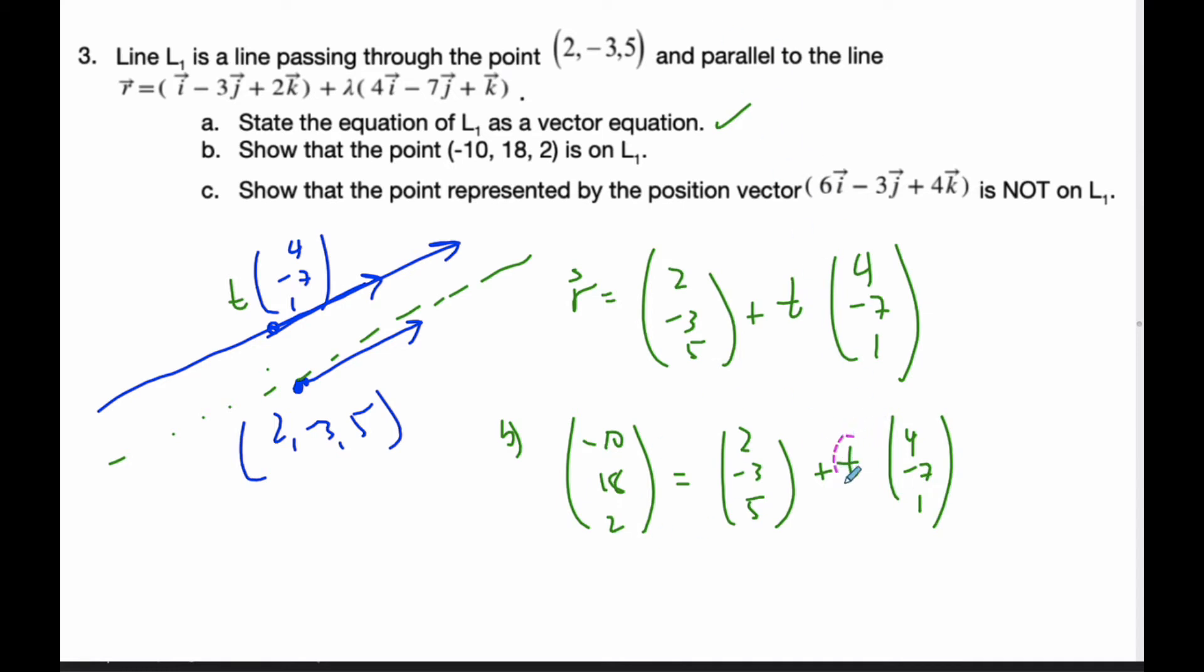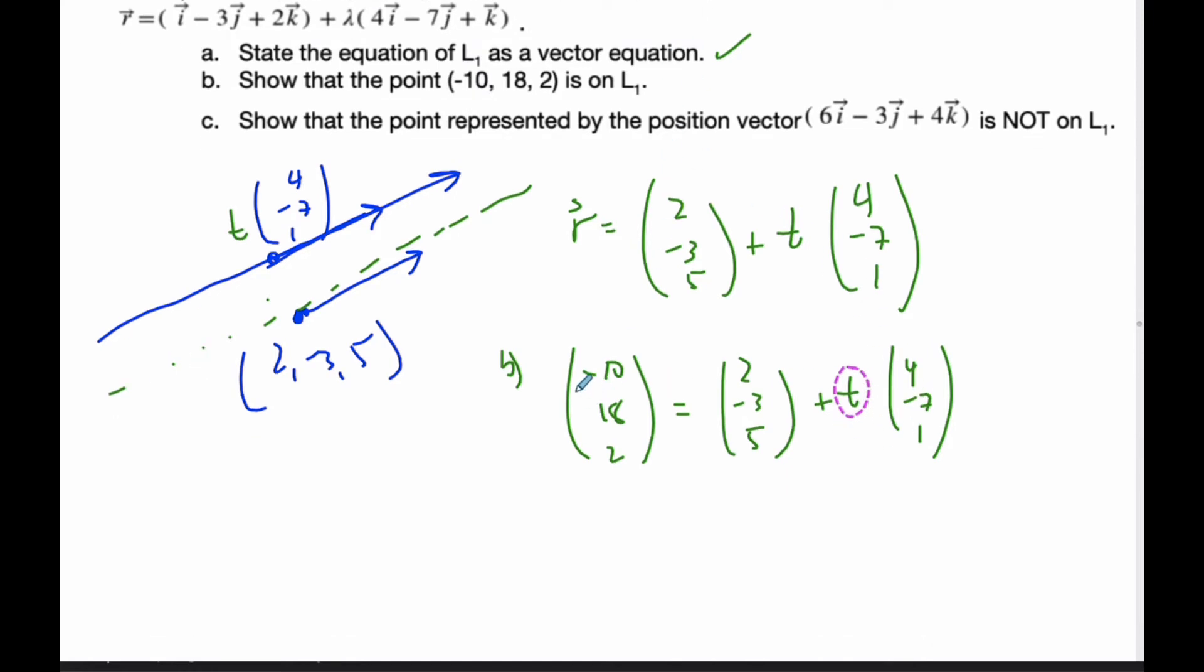t must be the same for x, y, and z components. So I'll make three equations. For the x component: -10 = 2 + 4t, which gives -12 = 4t, so t = -3.